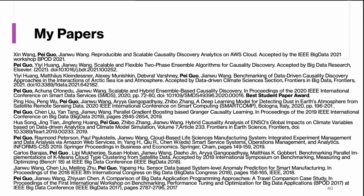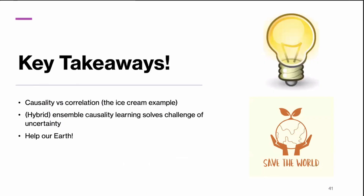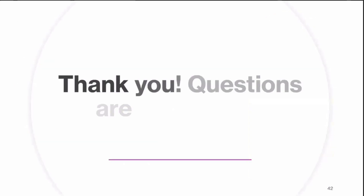Here are my published papers. The takeaways today are: know the difference between causality and correlation, our hybrid ensemble causality learning solves the challenge of uncertainty, and we have to save the world. Thank you.